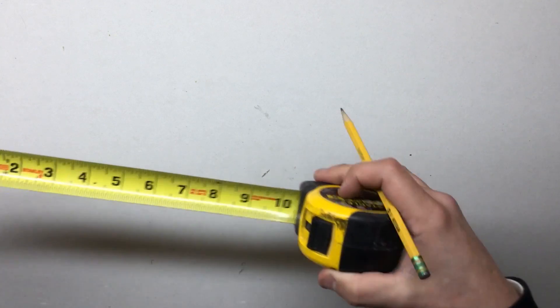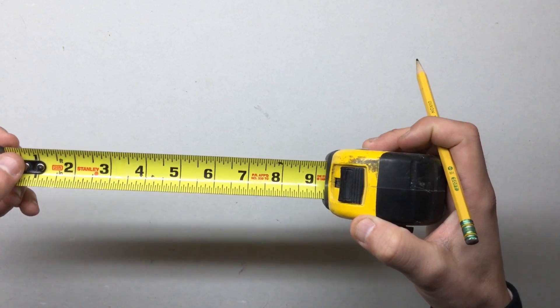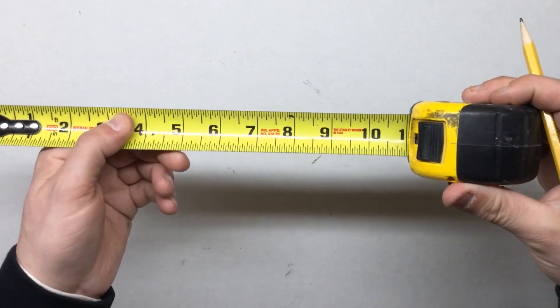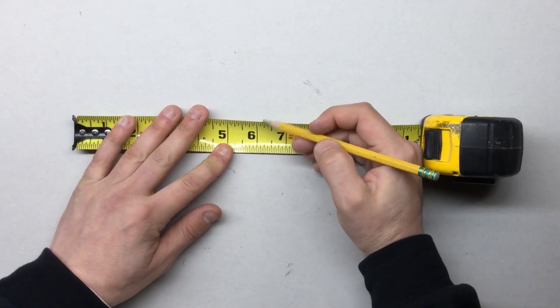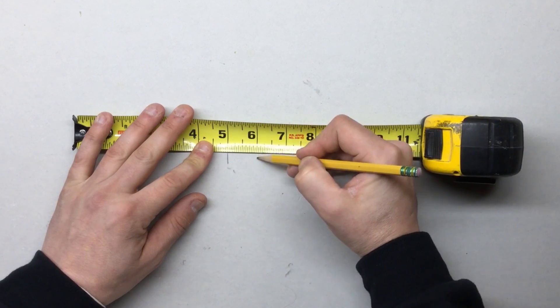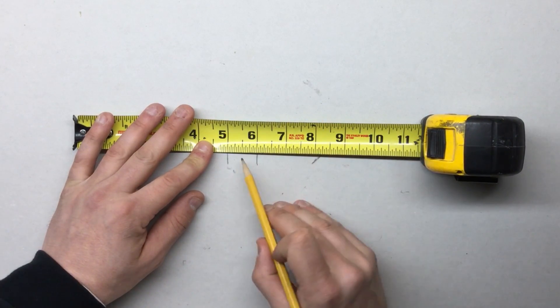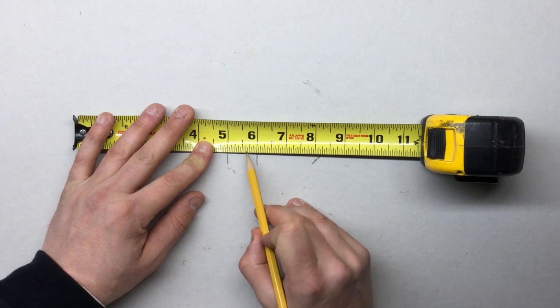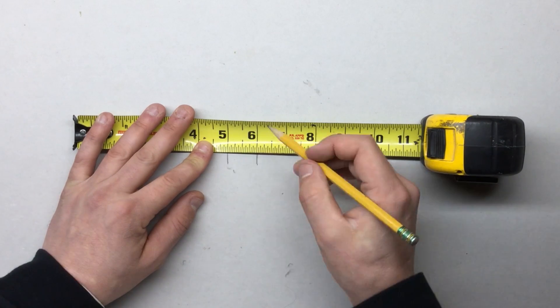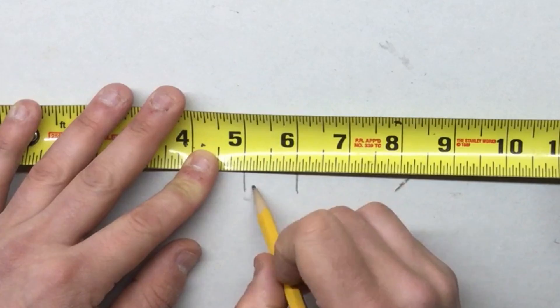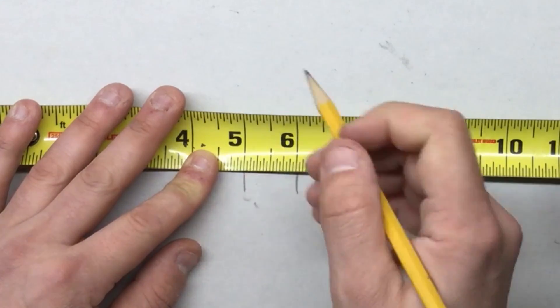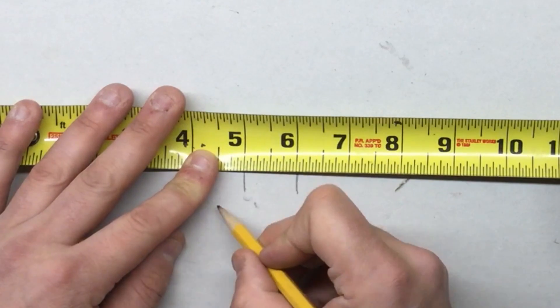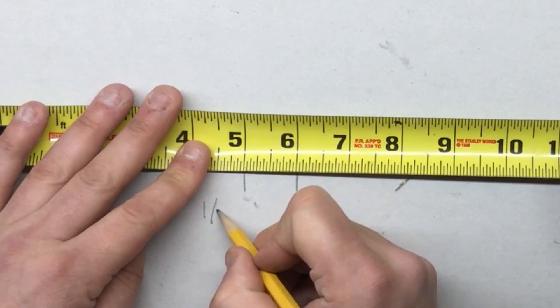Some things that people struggle with are, well first of all, reading a tape measure. So if you don't know how to read a tape measure, let's do a quick rundown. Between five and six is one inch. In between five and six are all these little lines. There's 15 little lines. Each one is a sixteenth of an inch. So the first one is one sixteenth.